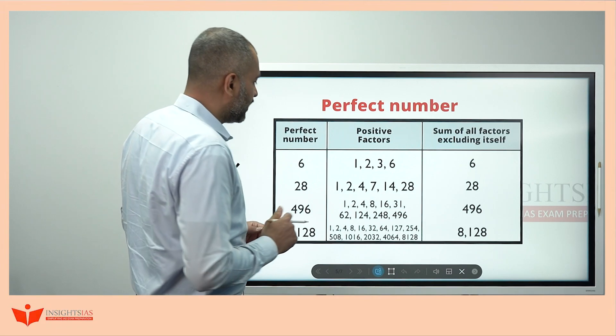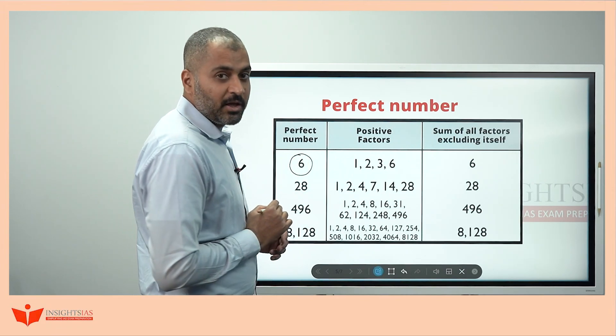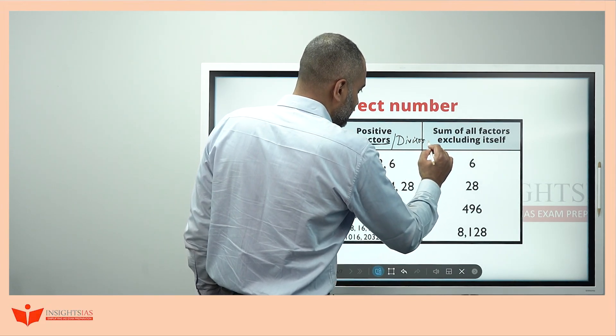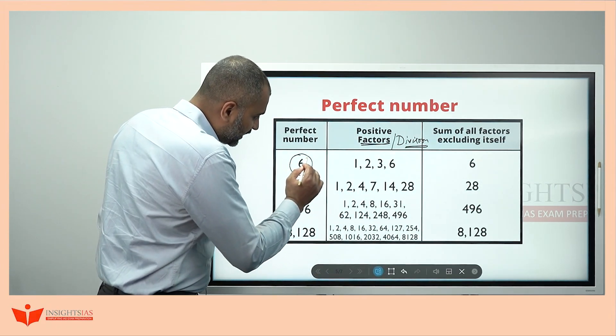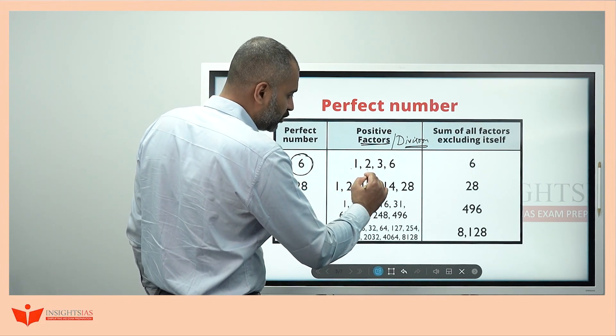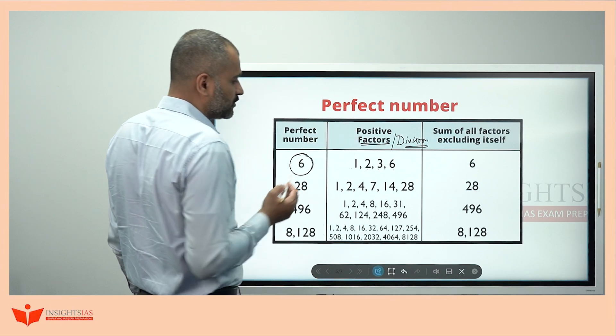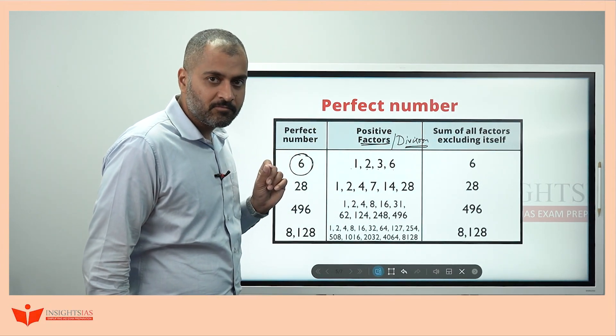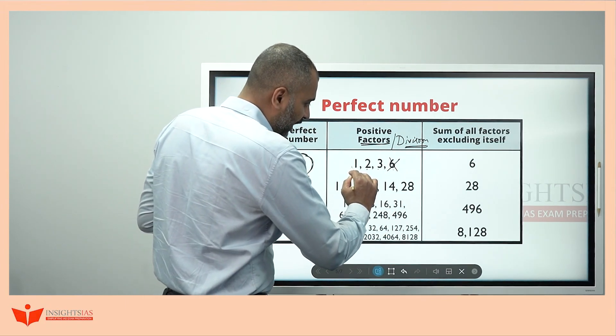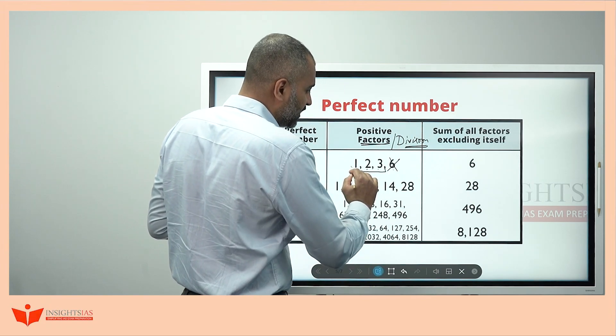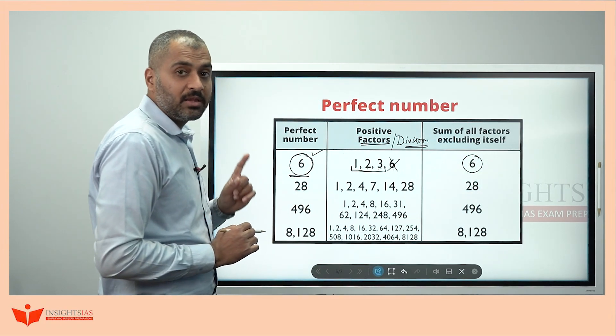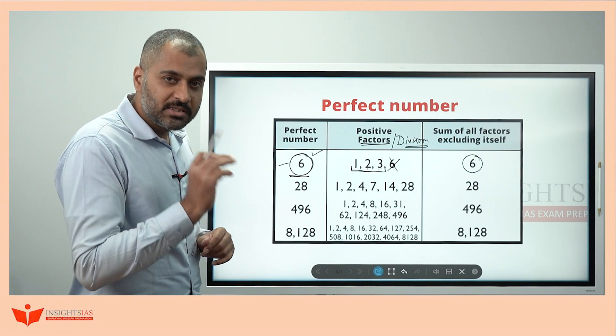Look here now. What are the factors for 6 here? Factors means divisors. In the previous videos also I have told you divisors. Which are the numbers which can completely divide 6? 1 can divide 6, 2 can divide 6, 3 can divide 6, and also 6 is also a factor of itself. Whatever the factors you are getting here, if you sum this, 1 plus 2 is 3, 3 plus 3 is 6. We are putting the same number, right? Then, 6 is called a perfect number.